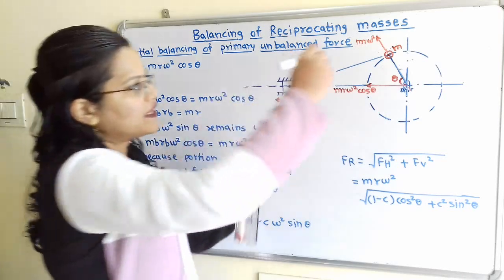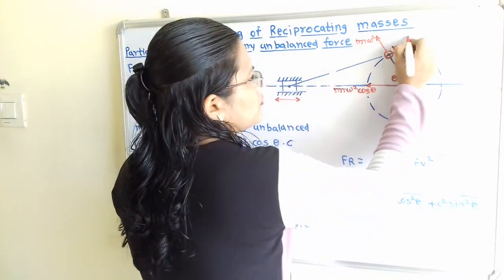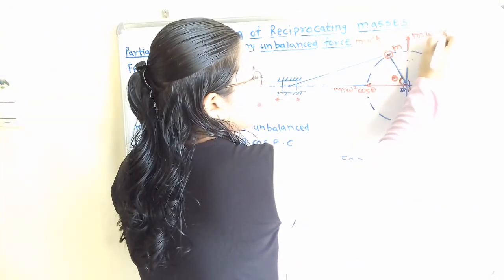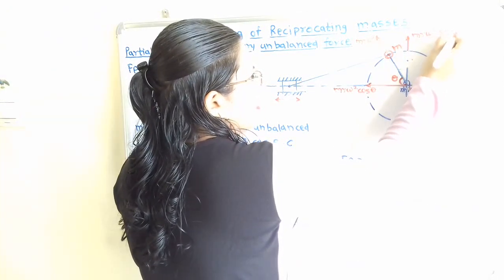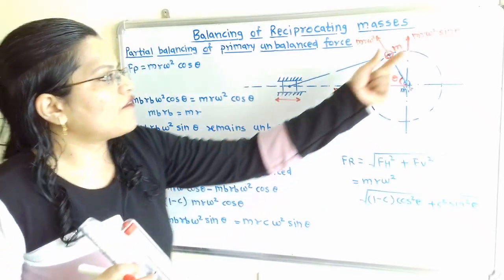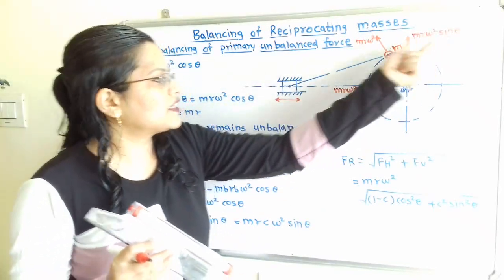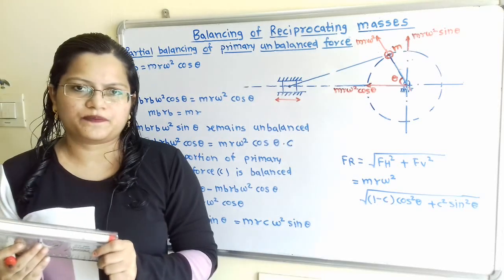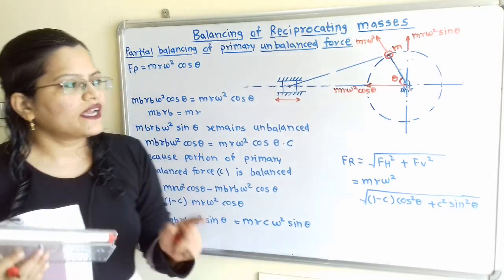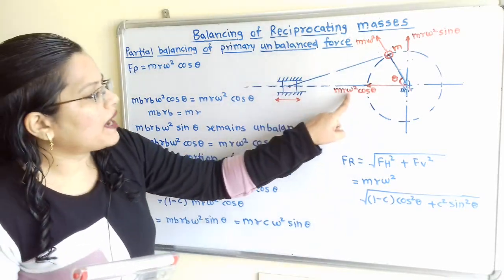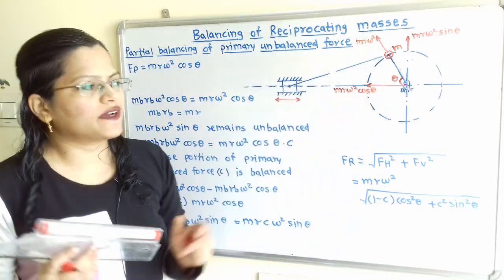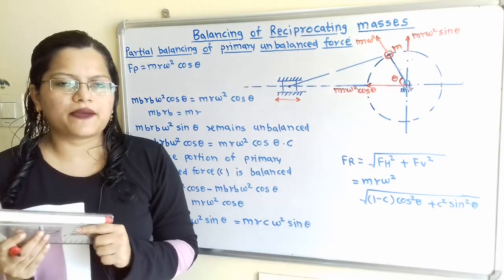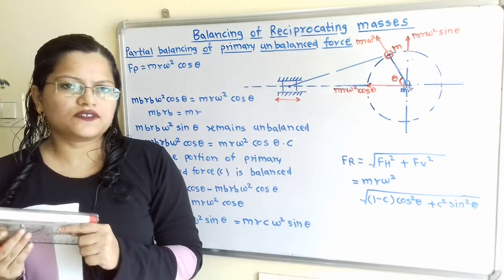The vertical component of this centrifugal force is M·R·ω²·sin θ. However, this vertical component does not affect the reciprocating motion of the piston, so we only need to consider M·R·ω²·cos θ when balancing the primary unbalanced force.